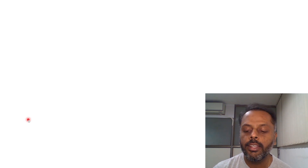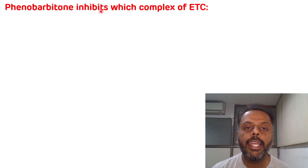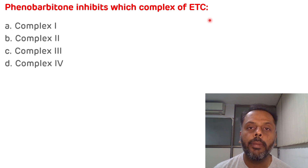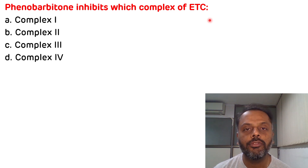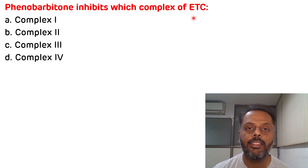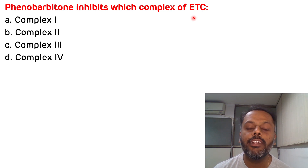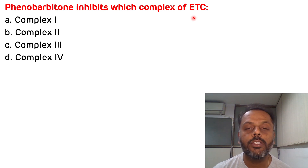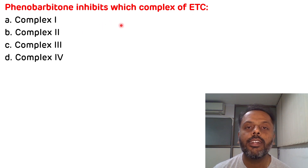Today's multiple choice question is: phenobarbitone inhibits which complex of the electron transport chain? The options are complex 1, 2, 3, and 4. This question is from the topic of inhibitors of the electron transport chain, which is very important for entrance examinations like NEET PG and NEXT PG. We will first discuss the inhibitors of the ETC and then the correct answer.